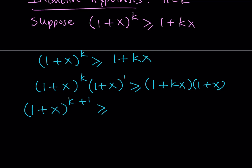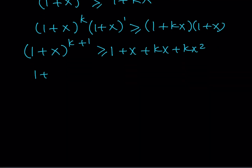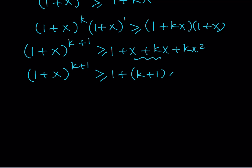Let's go ahead and distribute that expression. We get 1 plus x to the power k plus 1 is greater than or equal to 1 plus x plus kx plus kx squared. I'm going to simplify that a little bit: 1 plus x to the power k plus 1 is greater than or equal to 1 plus, and we can factor out x from those two terms, giving k plus 1 times x plus kx squared.